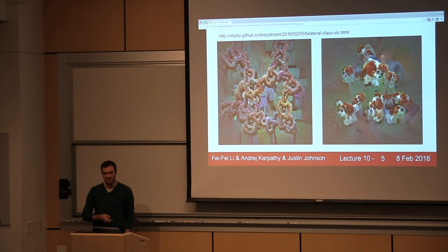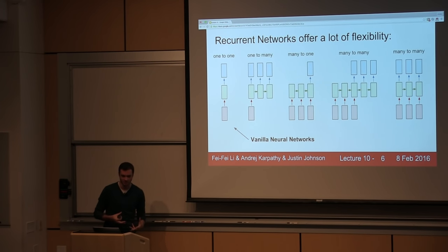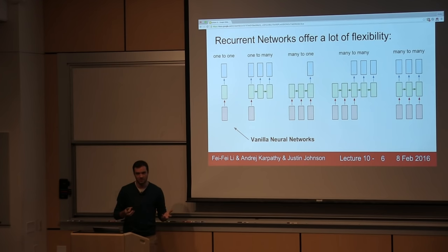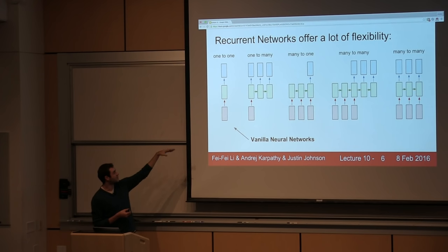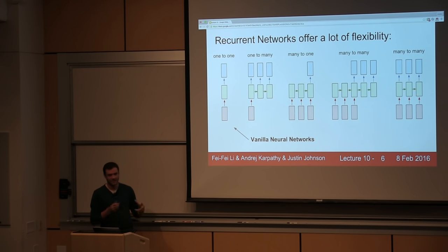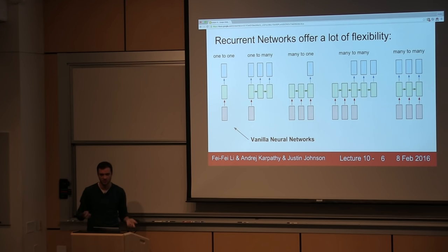So today we're going to be talking about recurrent neural networks. What's nice about recurrent neural networks is that they offer a lot of flexibility in how you wire up your neural network architectures. Normally when you're working with neural nets, you're in the case on the very left here, where you're given a fixed-sized input vector in red, then you process it with some hidden layers in green, and then you produce a fixed-sized output vector in blue. Say an image comes in, which is a fixed-sized image, and we're producing a fixed-sized vector which is the class scores.